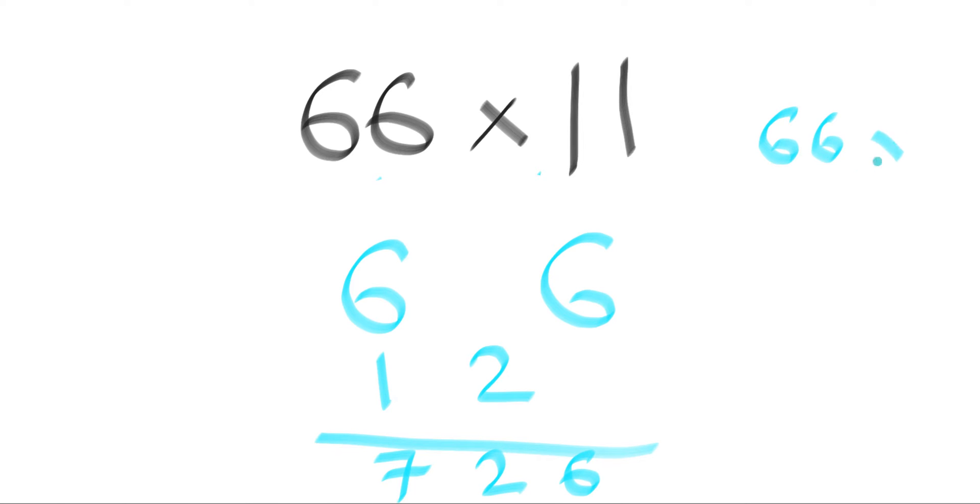Let's do this. 66 times 11, traditional multiplication, you get 66 and 66, and it adds up. 6 plus 6 is 12, 6 plus 1 is 7. Same thing, 6, 6, just you have to shift this 12 and add that, and you get 726.